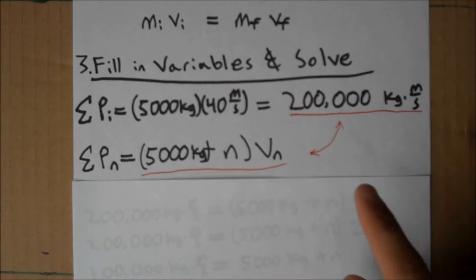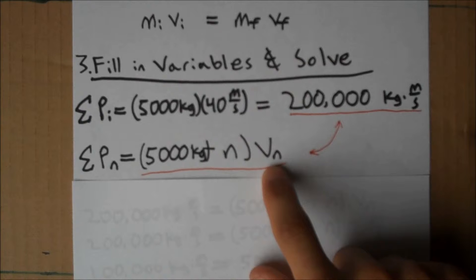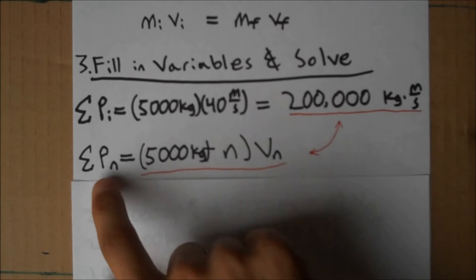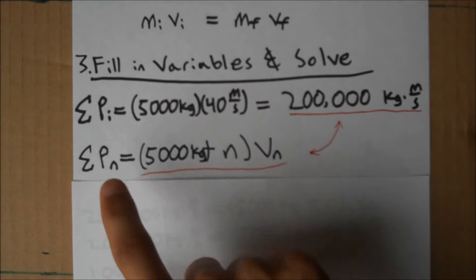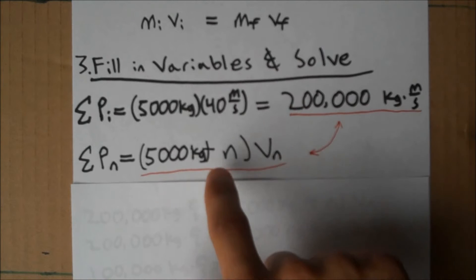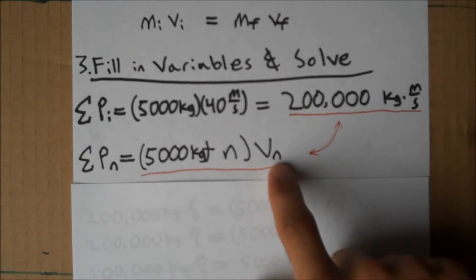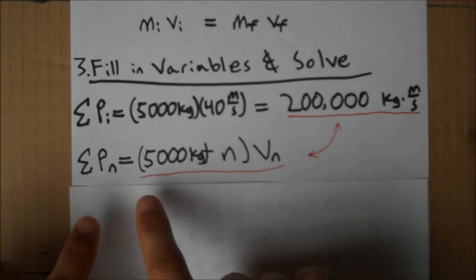And after n collisions, our velocity will have decreased to some new velocity. And so, this equation tells us that after n collisions, our new mass will be 5,000 kg plus n times our n-th velocity. Multiplying the two gives us momentum.